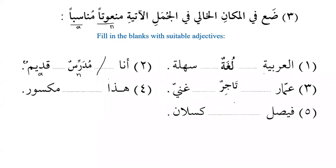Then we have 'hadha maksur' — something is broken. You can say 'hadha qalamun maksur,' 'hadha maktabun maksur,' 'hadha zujajun maksur,' 'hadha jawwalun maksur' — this is a broken mobile phone. The more vocabulary you have, the more sentences you can make. 'Faysalun talibun kaslan' — again we see that kaslanu is a diptote, mamnu' mina al-sarf.